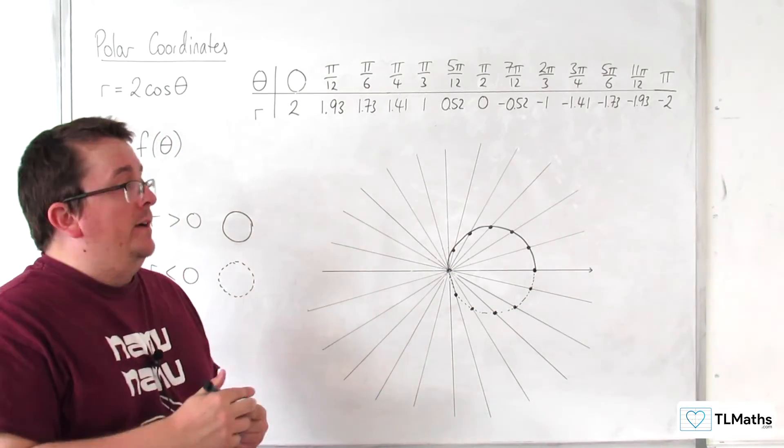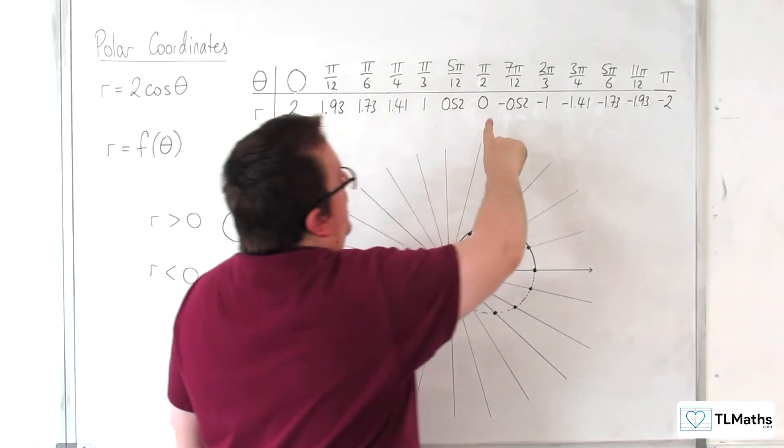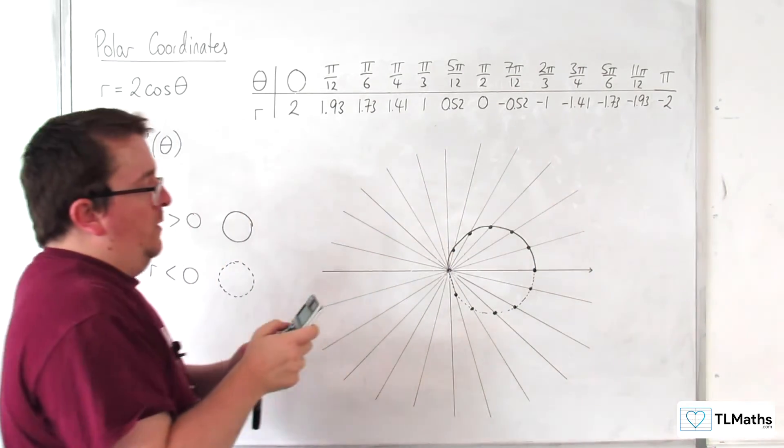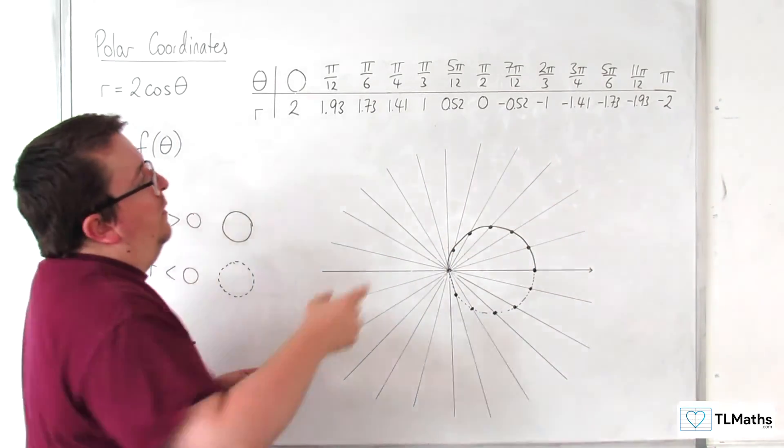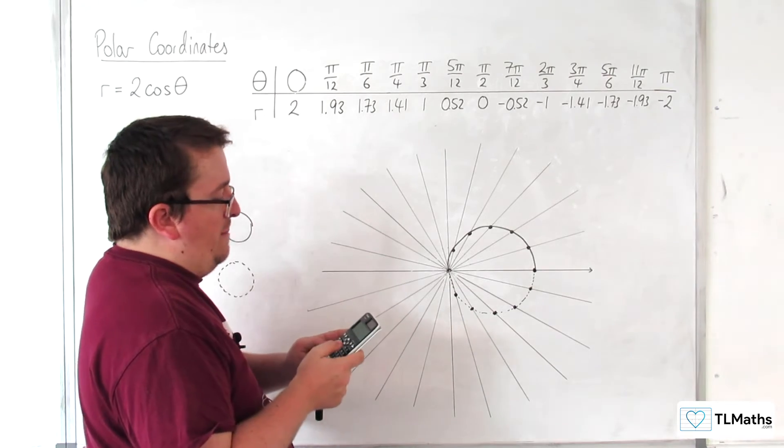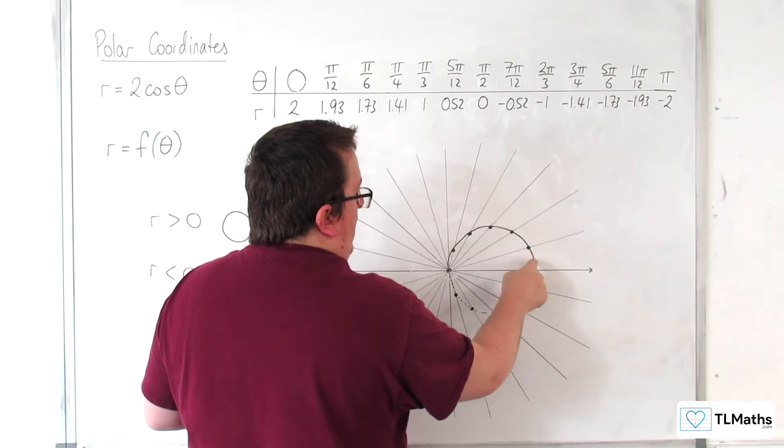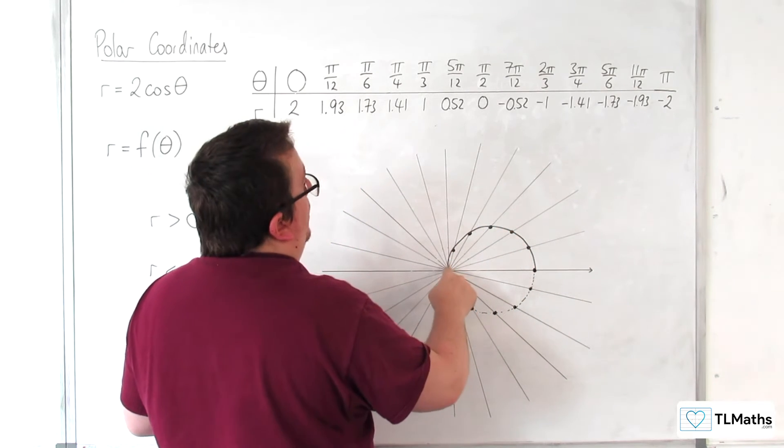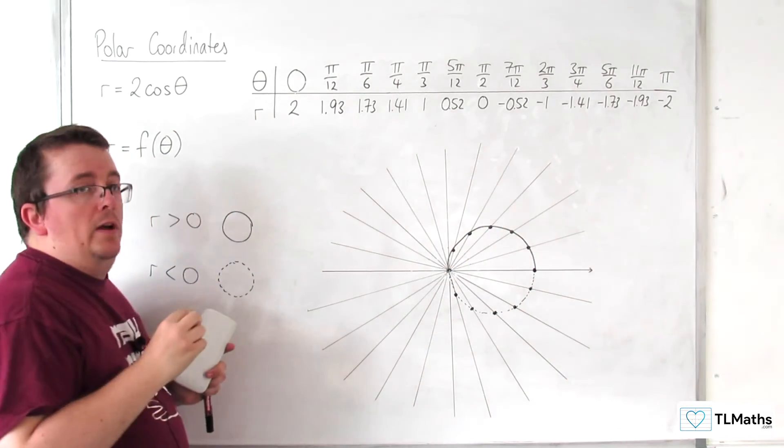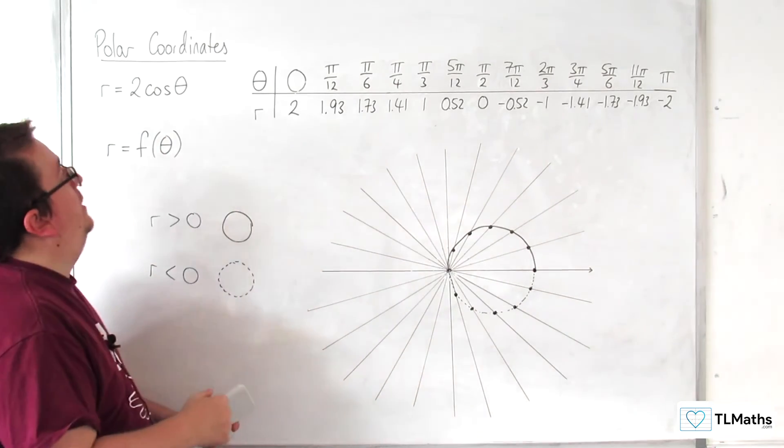Now if you continued it around to 2 pi, what's going to happen is this is going to come back around minus 1.93. So if you put in, what would that be, 13 pi over 12, we get minus 1.93. So it's coming back around here but dotted for the next part. Then when it gets here, you'll get to past the 3 pi over 2 point, and then it will be solid again because of the nature of cosine.